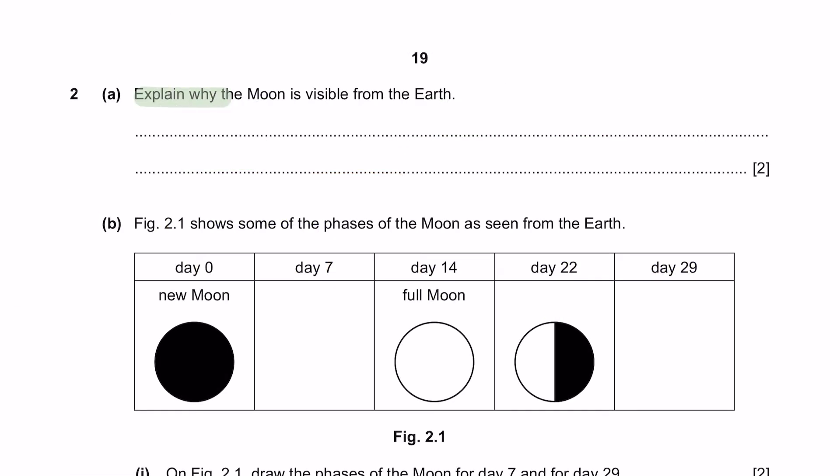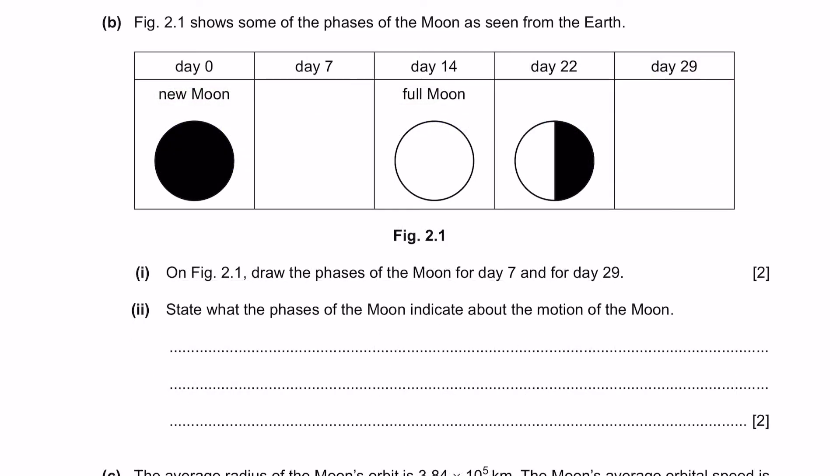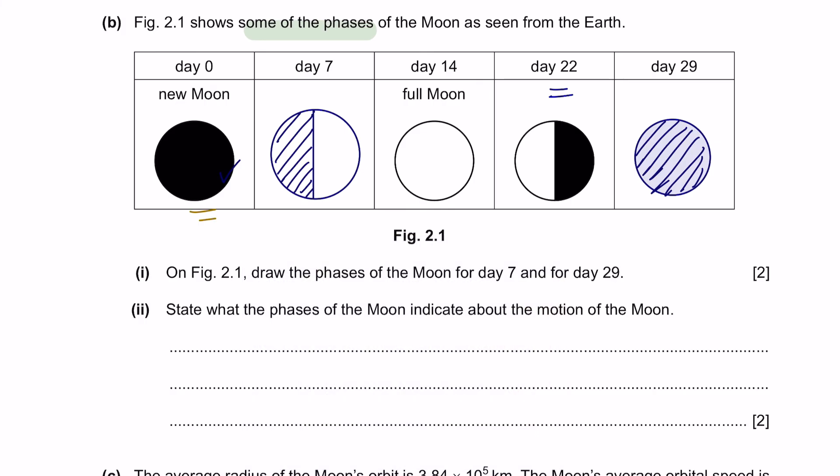Question 2 Part A. Explain why the Moon is visible from the Earth. The Moon is visible because the light from the Sun is reflected from the Moon's surface. Question B. Figure 2.1 shows some of the phases of the Moon as seen from the Earth. Part 1. Draw the faces of the Moon for day 7 and day 29. After new Moon, we see the first half of the Moon, so we shade opposite of day 22. Then you've got full Moon where everything is visible. And after 29 days, we observe a new Moon all over again.